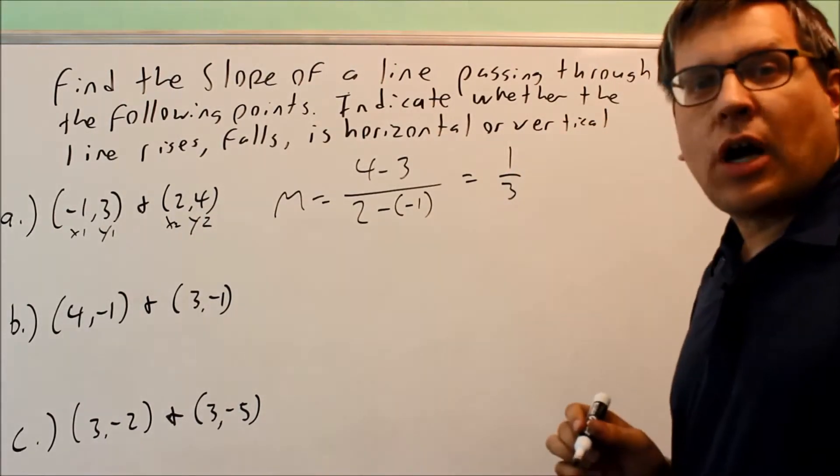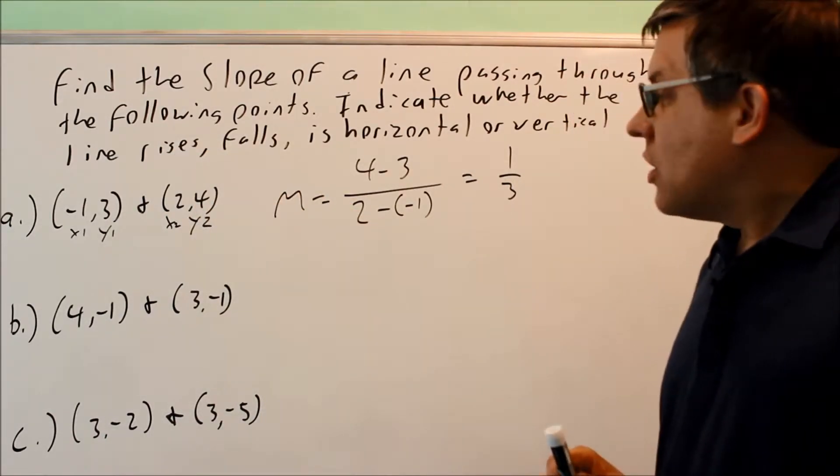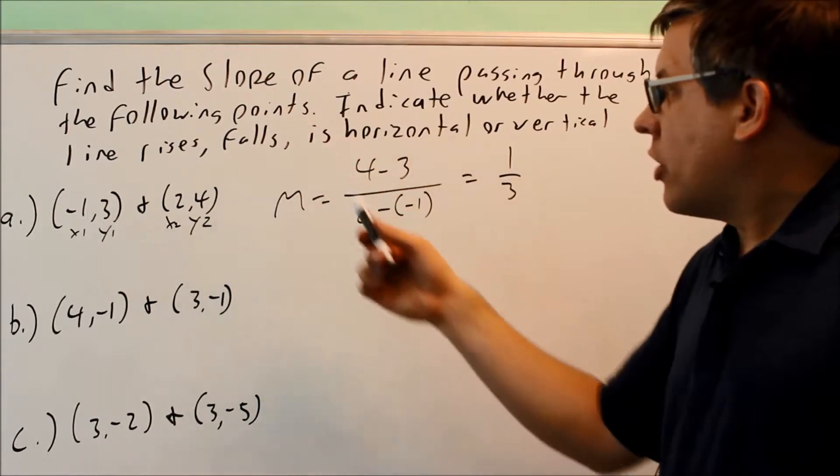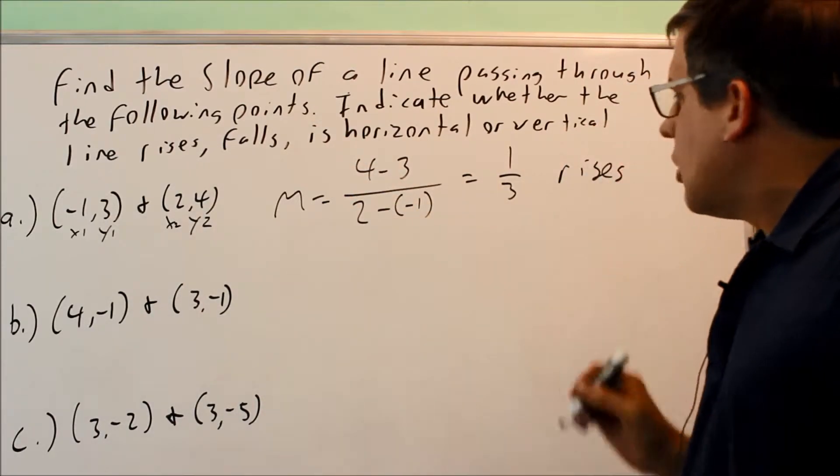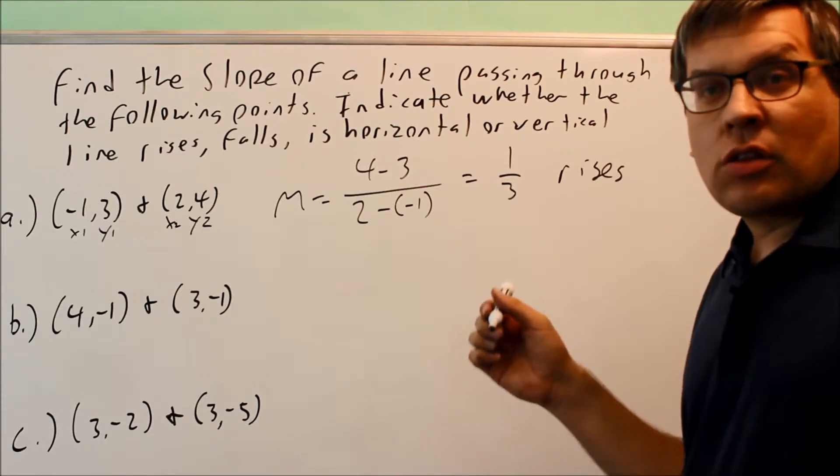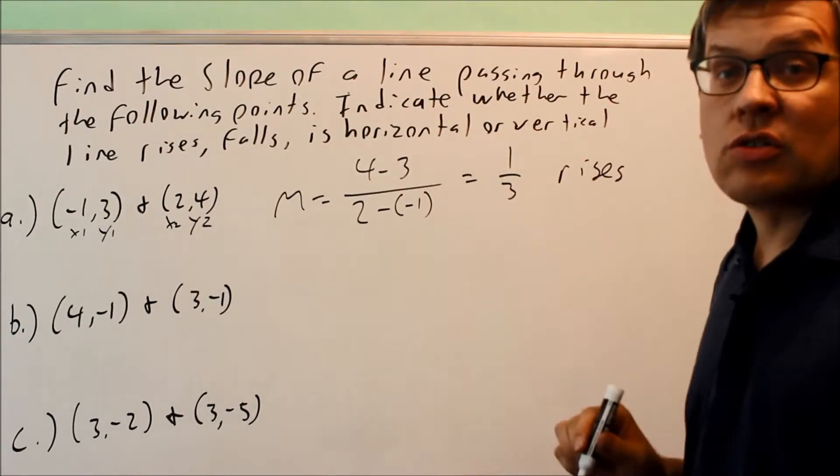So I get a positive slope. If I have a positive slope, it rises. If I have a negative slope, it's going to be falling. So in this case, I have rises, because as I go from left to right, the line is going to be increasing or going up. That's why we say it's rising.